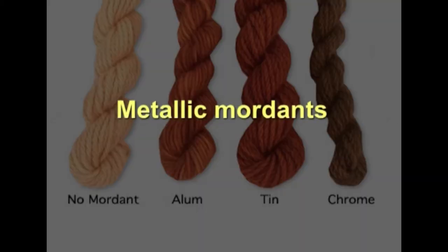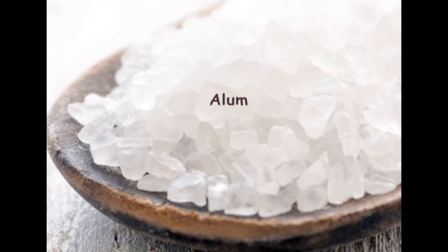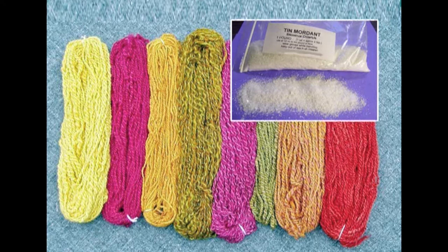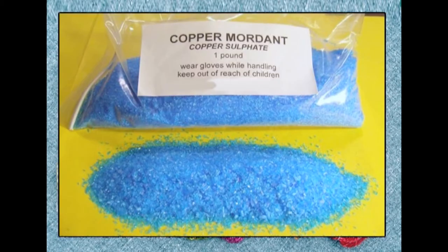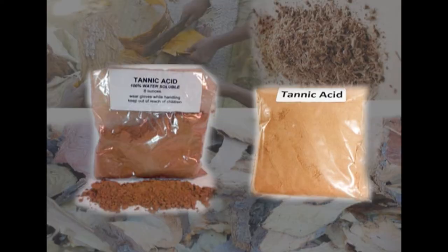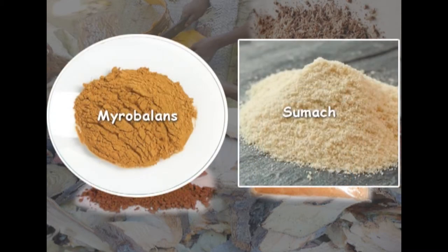Metallic mordants such as alum help to produce evenness and brightness. Iron mordants sadden or darken colors, bringing out green shades. Tin mordants bloom or brighten colors, especially reds, oranges, and yellows. Copper sulfate darkens colors and brings out greens. Tannic acid enhances tans and browns and is extensively used for mordanting many browns and blacks. Tannin and tannic acid are present in barks, leaves, fruits, and galls of many plants and are mostly used for leather. Among the natural tannins used for textiles, myrobalans and sumach are important.